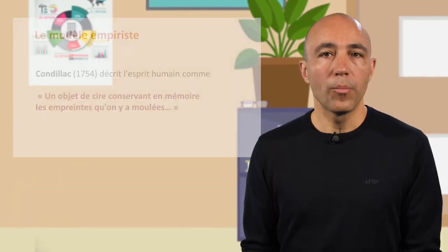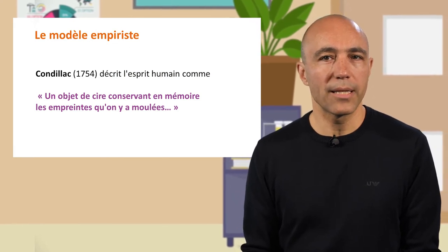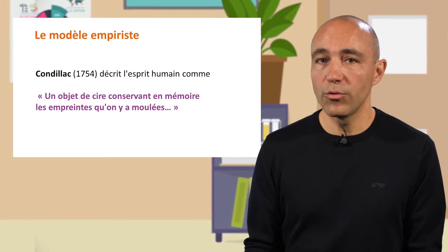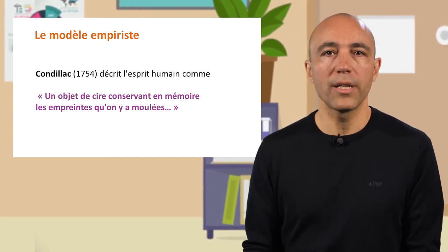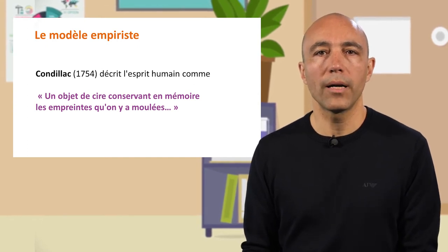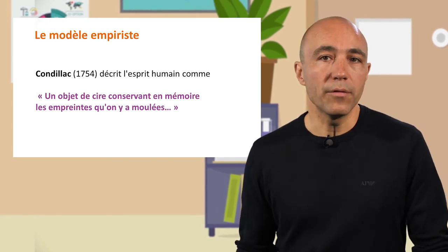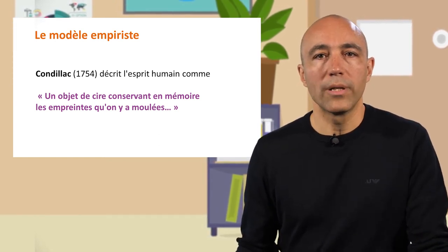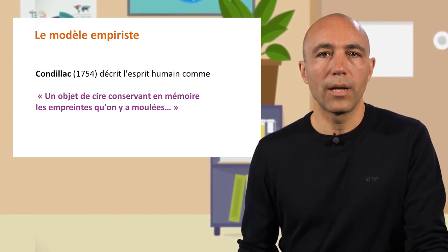Étudions-en quelques-uns pour mieux comprendre lesquels seront les mieux adaptés à la construction de pédagogies tournées vers l'éducation pour un développement durable. Le premier modèle est dit empiriste. Il s'appuie sur l'idée que l'apprentissage procède par des processus d'imprégnation et de mémorisation. C'est le plus naïf de tous, et le plus ancien aussi. En 1754 déjà, Condillac décrivait l'esprit humain comme un objet de cire conservant en mémoire les empreintes qu'on y a moulées. On parle également de modèles transmissifs, car le livre, le cours magistral ou la conférence sont les seules pédagogies que l'on peut imaginer décliner à partir de cette représentation de l'apprendre.